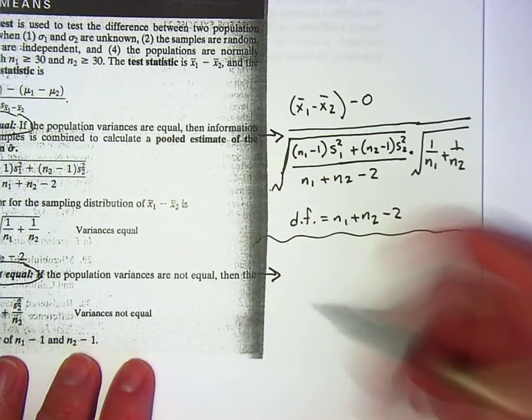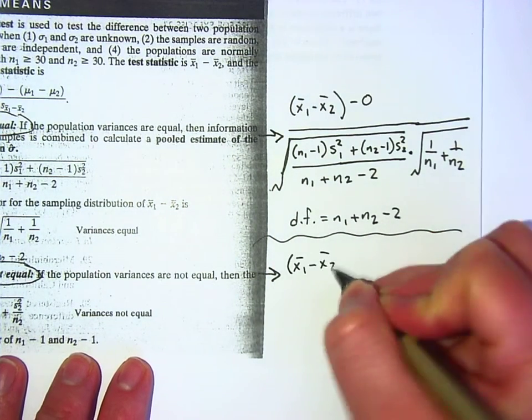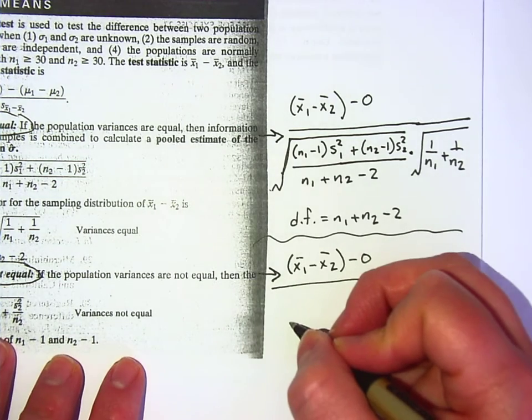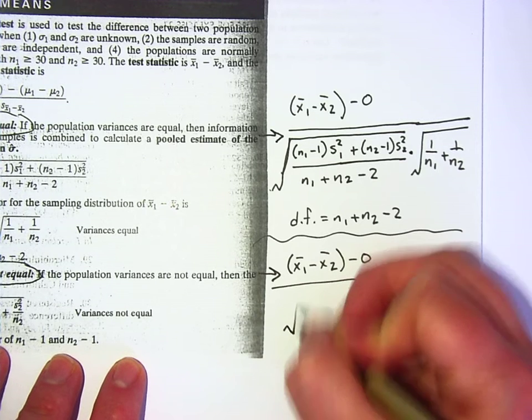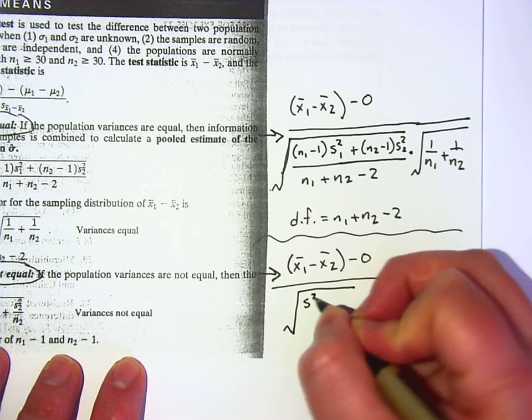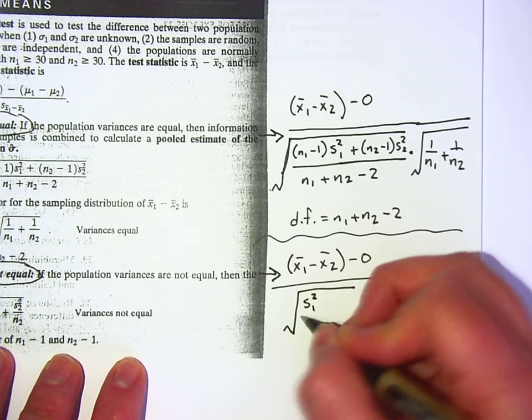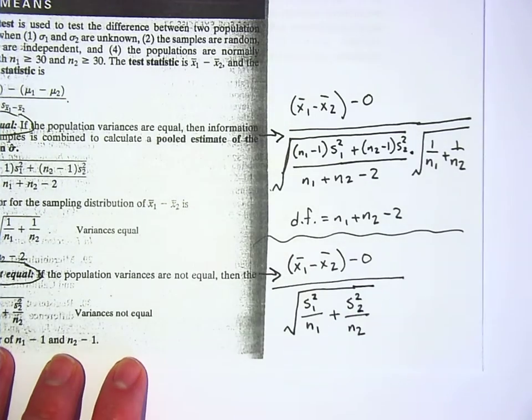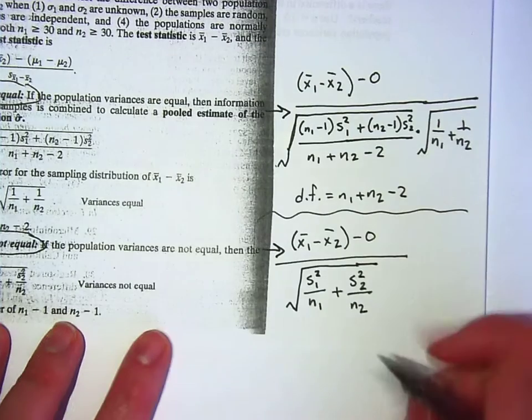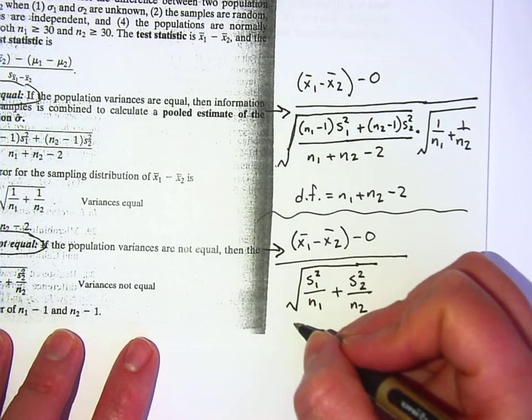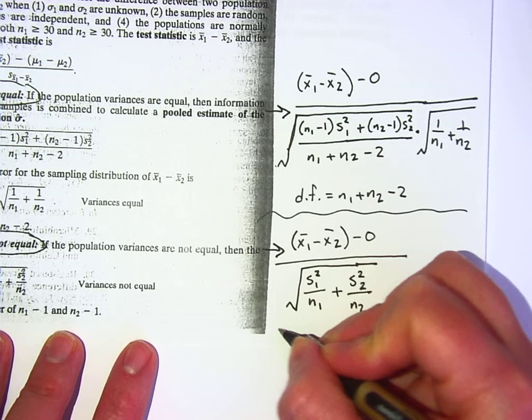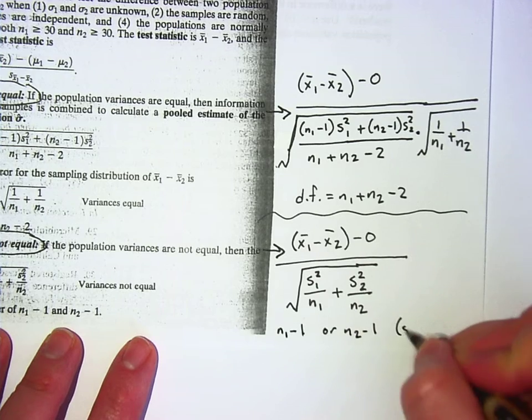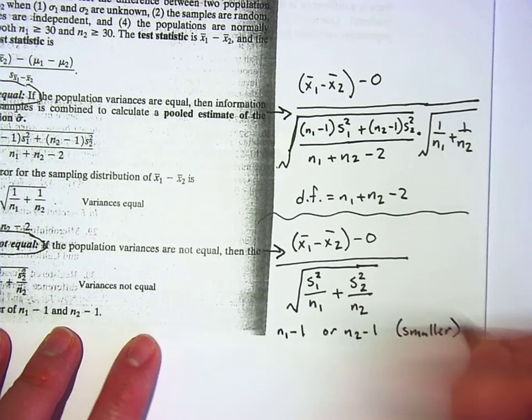If the variances are not equal, we still start with that x bar 1 minus x bar 2 on the top minus 0, which you don't have to type in your calculator. On the bottom is a lot easier. It is just the square root of the standard deviation squared sub 1 divided by n sub 1 plus the standard deviation squared sub 2 divided by n sub 2. And then in this case, the degree of freedom is n sub 1 minus 1 or n sub 2 minus 1, whichever one is smaller.